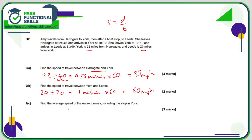For the average speed of the entire journey, the total distance is 42. The journey time goes from 9:30 until 11, so that's one and a half hours. So if I divide 42 by 1.5, since this is in hours, my speed is going to be in miles per hour, and that works out as 28 miles per hour.